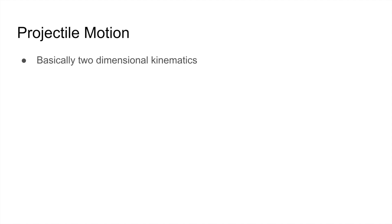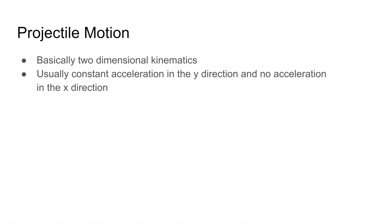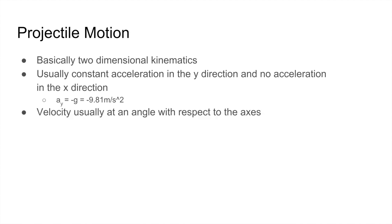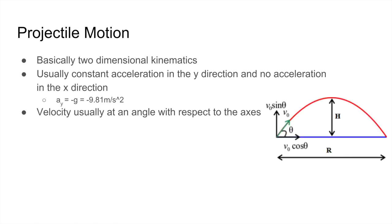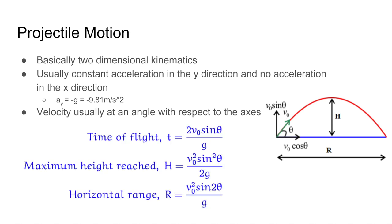Next we move on to projectile motion, which is basically two-dimensional kinematics: there's zero acceleration in the x direction and constant acceleration downward in the y direction — 9.81 m/s² or little g. The velocity in these problems is usually at an angle theta with respect to the axes. We can use this velocity and the constant acceleration to solve for the time of flight, the maximum height reached, and the horizontal range by looking at the x and y velocity components. Make sure you know how to derive these three equations as they appear very frequently.